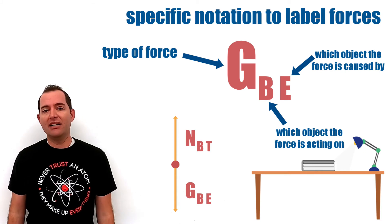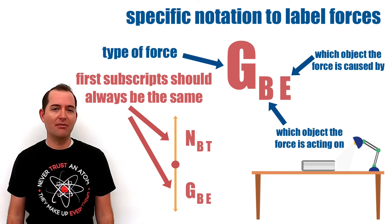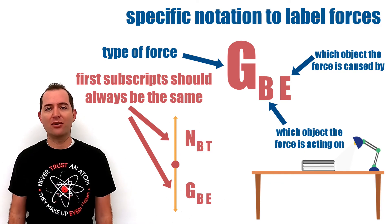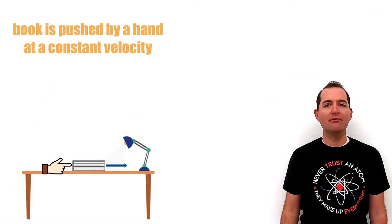In a successful free body diagram, the first subscripts should always be the same and they should describe the object on which the forces are acting. In this case, this is the book. Let's look at another example where a book is being pushed across the table at a constant velocity.